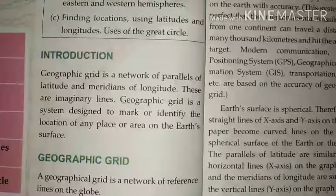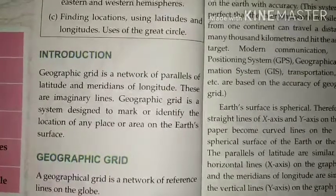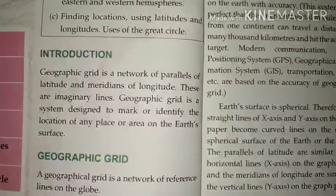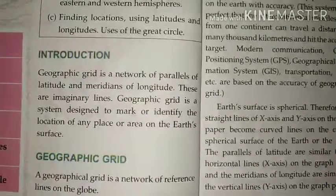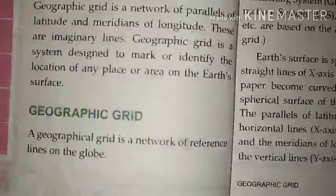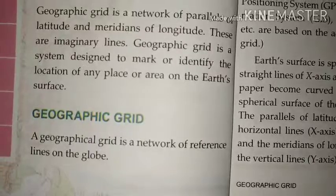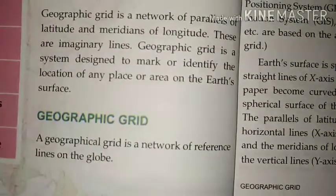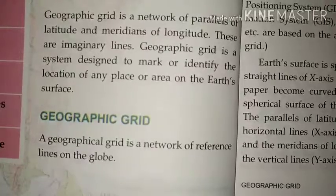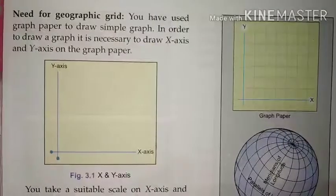Since the earth is spherical in shape, locating a place is very difficult. That is why a set of imaginary lines have been drawn over the globe so that we can locate any given place. Some lines are horizontal and some are vertical. The horizontal lines are called latitudes and the vertical lines are called longitudes. A geographic grid is a network of reference lines on the globe.